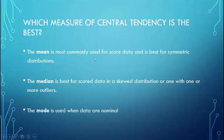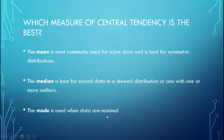So, importantly for this class: which measure of Central Tendency is the best? The mean is most commonly used for score data and is best when you have symmetric distributions. The median is best for score data when you have a skewed distribution — when you have some very high or very low scores. And the mode is most used when your data are nominal or grouped.